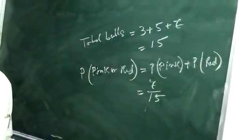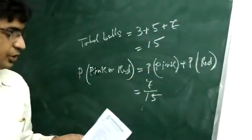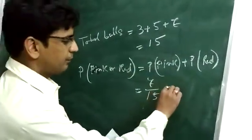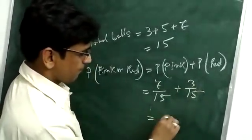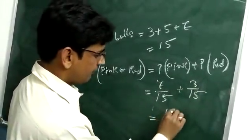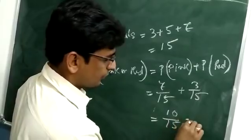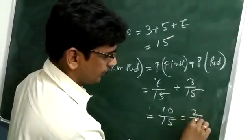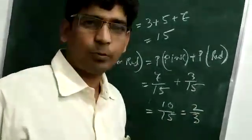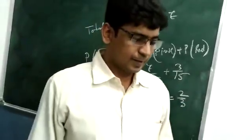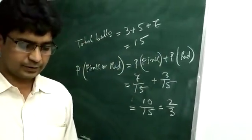The probability of red: 3 out of 15, so plus 3 by 15. Total is 10 by 15, which is equal to 2 by 3. The required probability is 2 by 3. Answer: B.